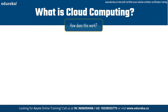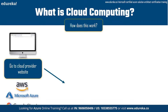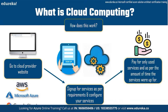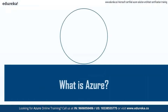So how does this work? John goes to the cloud provider of his choice — Amazon Web Services, Microsoft Azure, or Google Cloud are the top providers. He signs up for an account, then signs up for the services he requires and configures the resources his app needs. The amazing thing is that he only pays for the services he uses and for the amount of time those services were running. So let's now talk about what is Azure.